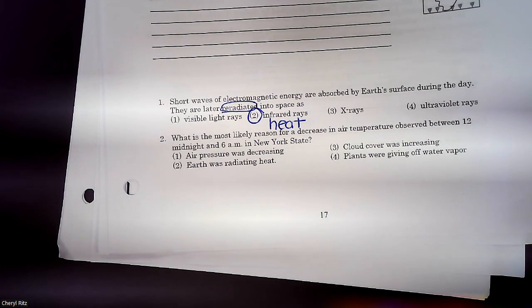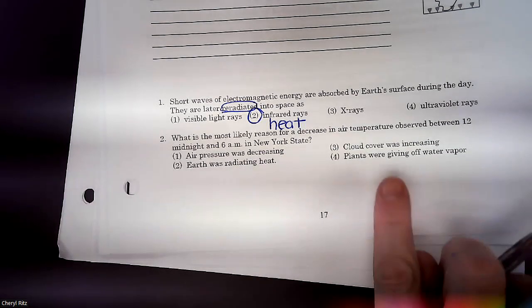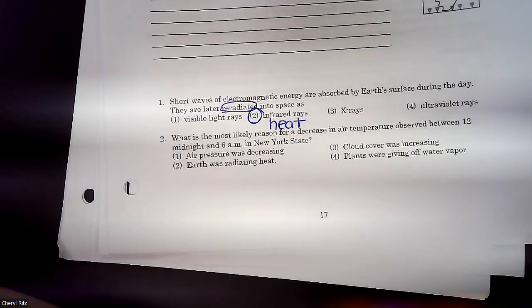What is the most likely reason for a decrease in air temperature observed between 12 midnight and 6 a.m. in New York State? Can I just point out, guys, from 12 midnight to 6 a.m., what's it like in New York State? It's dark. So why is it getting colder then? You think cloud cover was increasing? So what do the clouds do when those sunbeams are trying to leave?